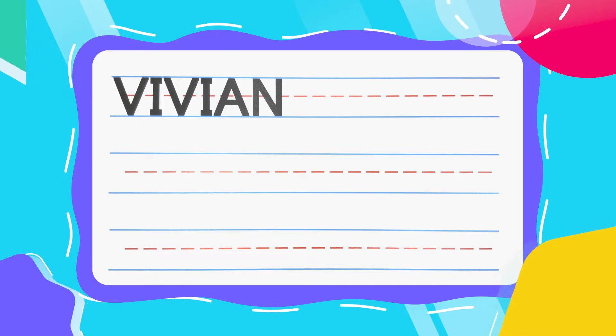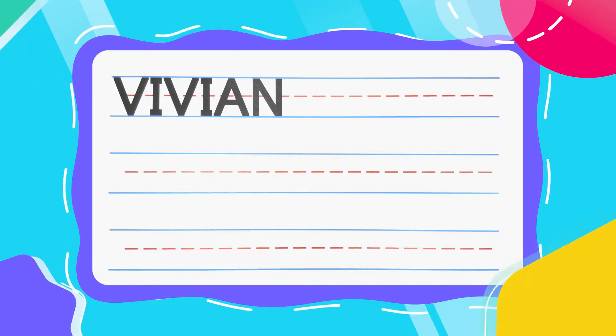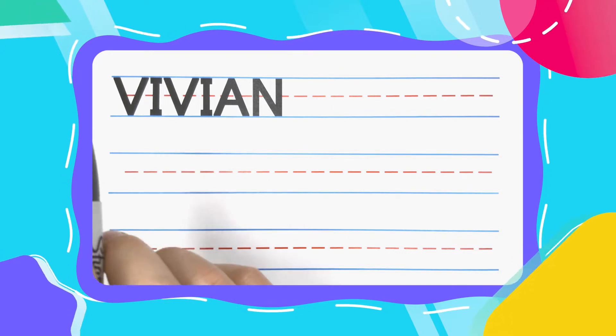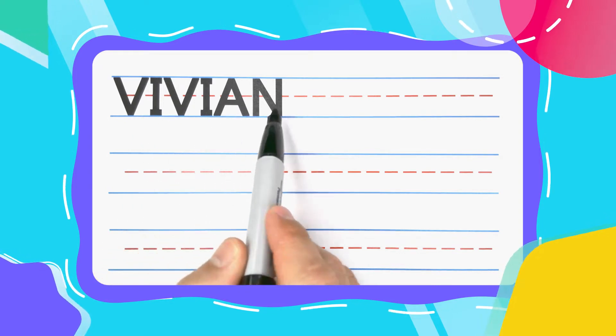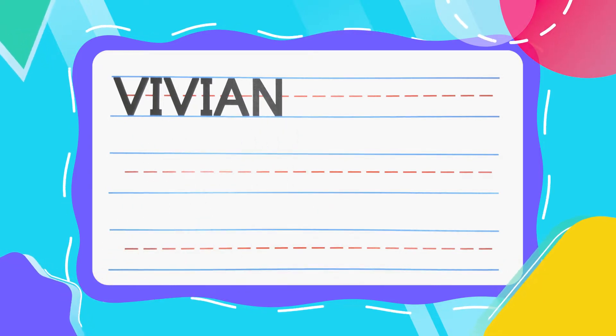Is your name Vivian? If it is, you have a really cool name and I'm really happy you're here to learn how to write it with me today. Vivian is spelled V-I-V-I-A-N. Now let's get started.